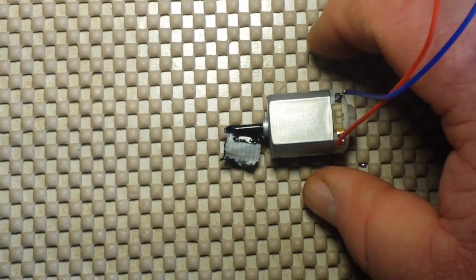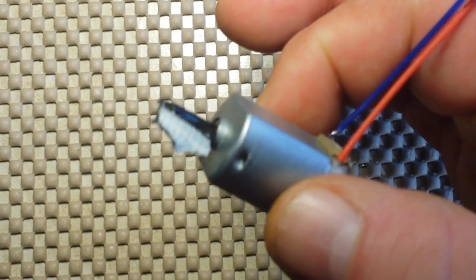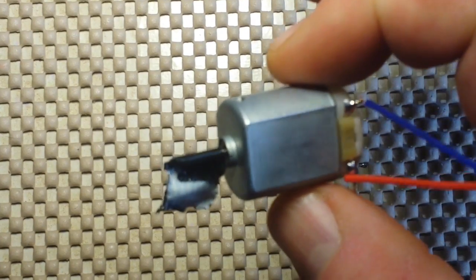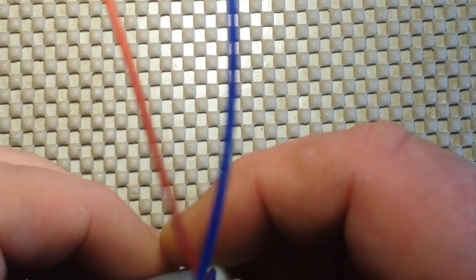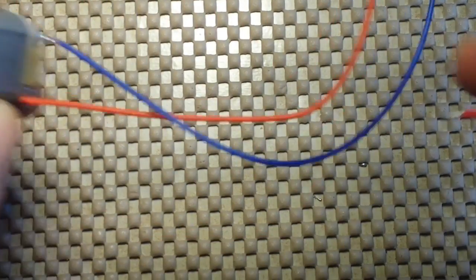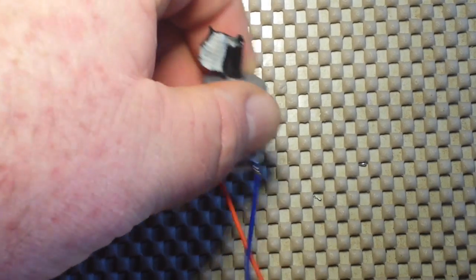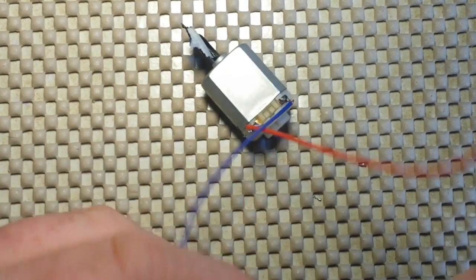All right guys, here's a little DC electric motor, nothing special. This is just a little 3 to 5 volt motor, and if we put current to it in one direction it will spin in that direction.